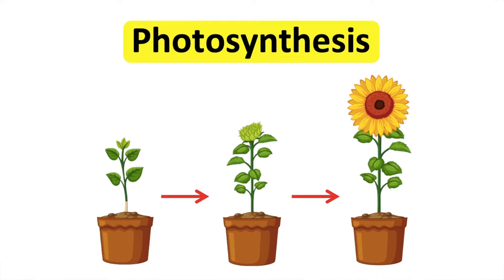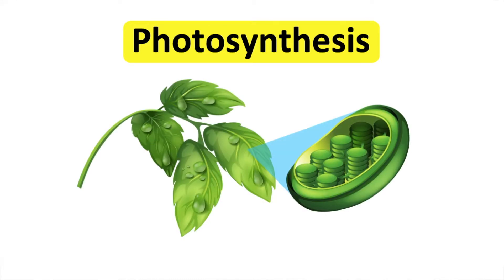Plants are producers. This means that they are able to make their own food. They do this by the process of photosynthesis. Photosynthesis takes place in the leaves of plants.